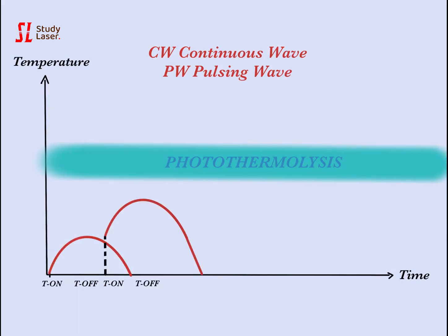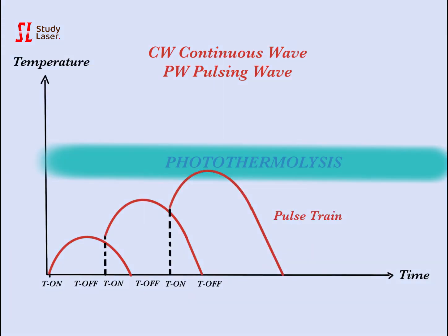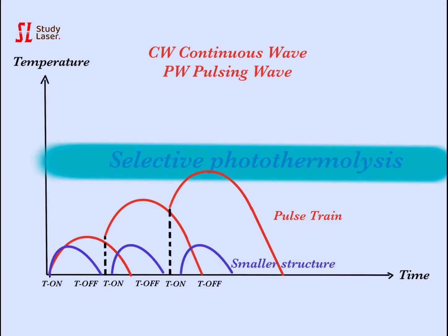When time-off is shortened, the tissue is not totally cooled down before the laser starts heating up the tissues again. Consecutive two, three, or four pulses of low intensity are called a pulse train. Alone, this pulse intensity would not have any effect, but accumulated, they reach a selective photothermolysis. As smaller structures cool down more quickly, the accumulation does not occur and the structure remains safe. This is called selective photothermolysis.